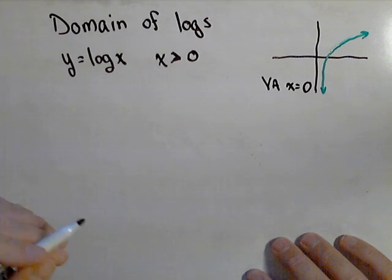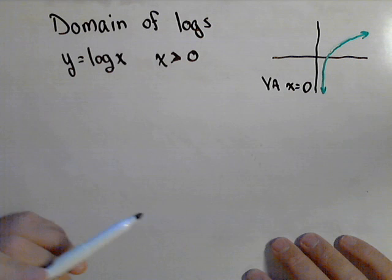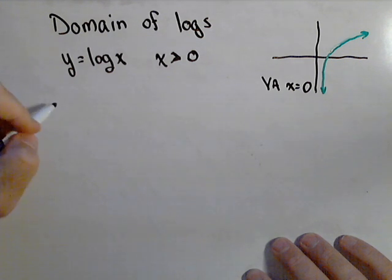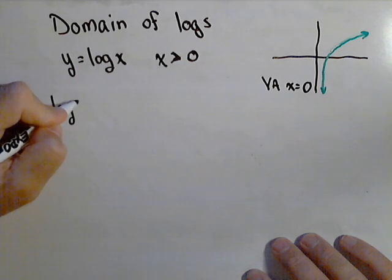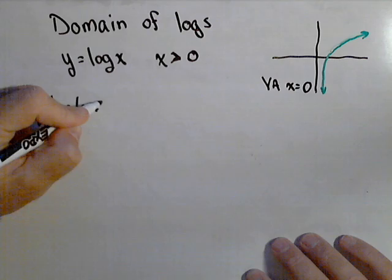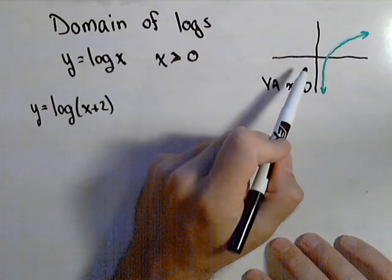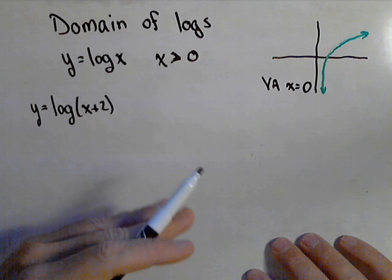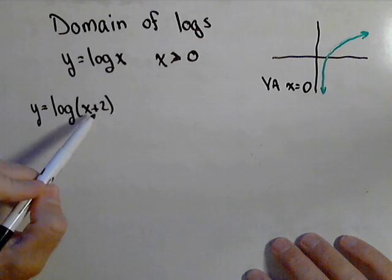Now, what's going to happen is we'll look at logarithmic functions that are shifted left and right and that changes where the vertical asymptote is. For instance, if we had the function y equals log of x plus two, that would shift our graph two units to the left. Then that shifts the vertical asymptote two units to the left and so on.